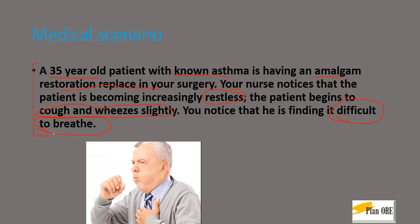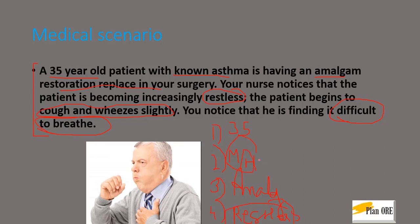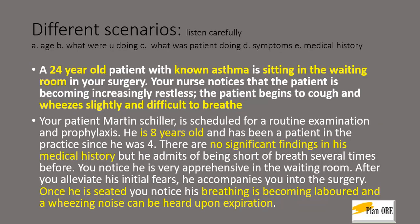What is your diagnosis? There are four things to pay attention to while they are reading the scenario: the age — so it's an adult; he has a medical history of asthma; you are doing an amalgam restoration at that point in time; and he is facing difficulty to breathe, coughing, wheezing slightly, and is restless. Based on his medical history and clinical features, it's easy to diagnose an asthmatic attack. You need the age so that you can tell the proper dose of medication to administer later.